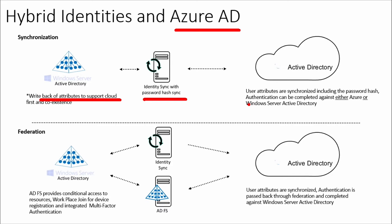The traditional synchronization approach used FIM — Forefront Identity Manager. More recently, DirSync became the default synchronization engine when connecting with Office 365. It takes users, identities, groups, and objects for authentication from on-premises Active Directory and synchronizes them up to Azure Active Directory, Office 365, or Intune.